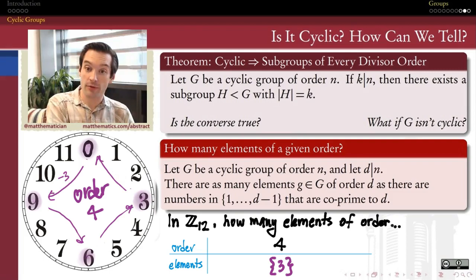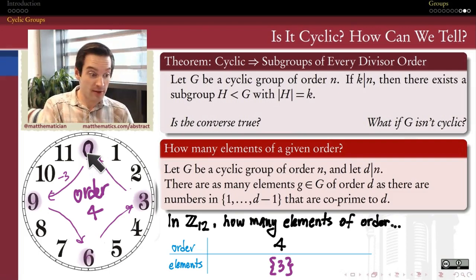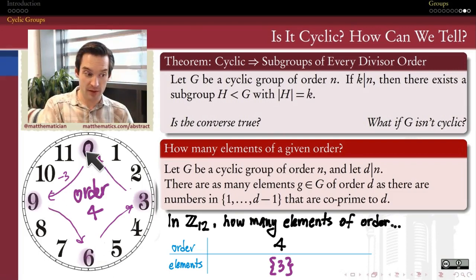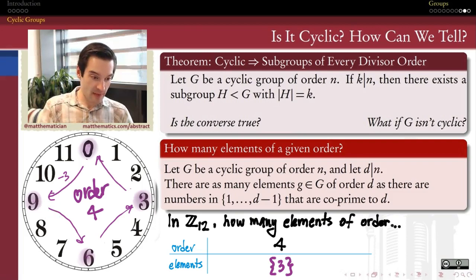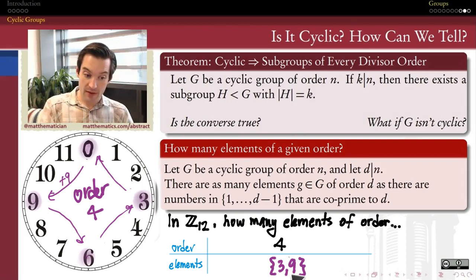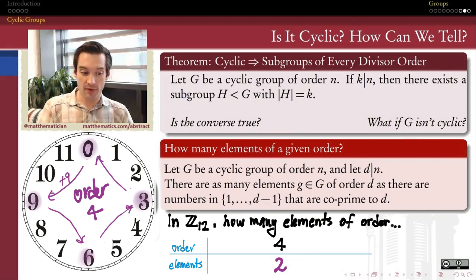The answer is yes. All we have to do is reverse the arrows. If instead of adding 3 we subtract 3, we make a different circuit around the clock with 4 stops — first at 9, then at 6, then at 3, then back to 0. So the additive inverse of 3 is also an element of order 4. The additive inverse of 3 in Z mod 12 is the equivalence class of negative 3, which is also the equivalence class of 9. So the elements of order 4 are 3 and 9 — there are two of them, because there are two numbers less than 4 that are co-prime to 4, namely 1 and 3.